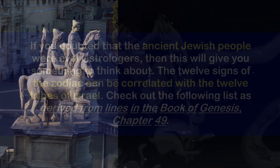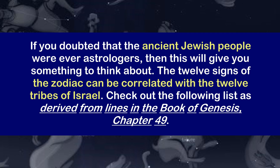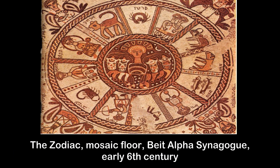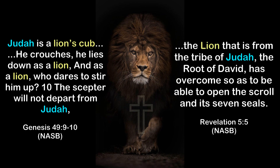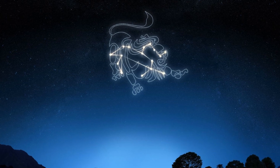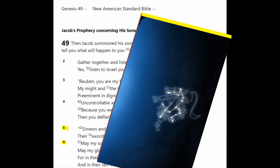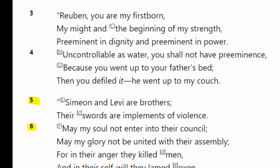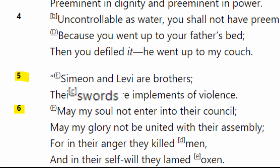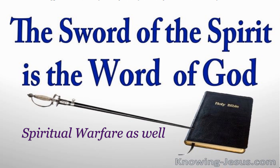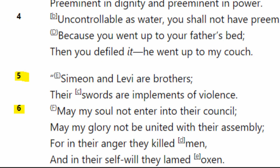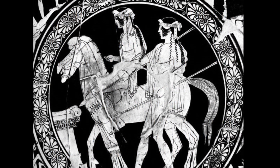Judah is associated with being a lion — which is why Jesus in Revelation 5 states he is the Lion from the tribe of Judah, originating from Genesis 49. Looking at Simeon and Levi, it states: 'Brothers, and their weapons of violence are their swords. In their anger they killed men.' Swords are the main weapons of warfare in ancient biblical times, and it's a continual thing — brothers of war.